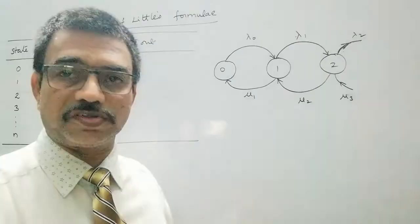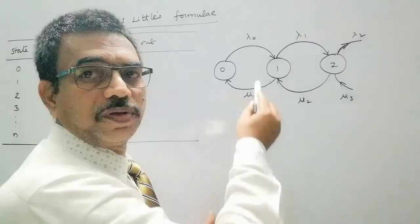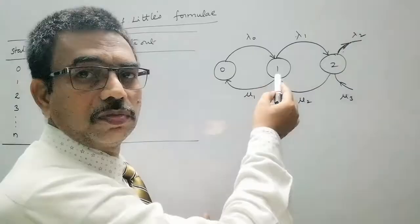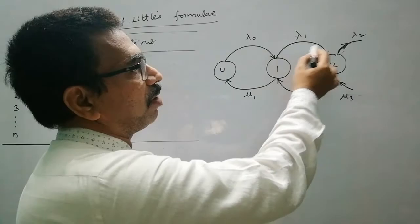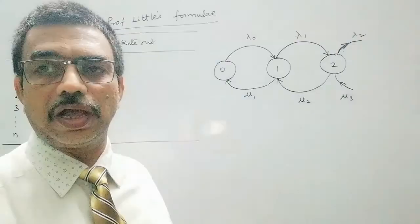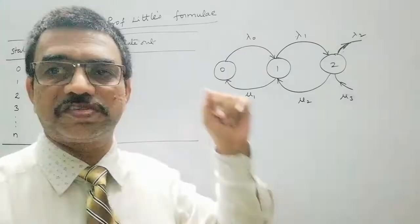Now let us have a quick look at the process. The birth and death process: suppose the current state is 0. Then with a new arrival — that is, with a birth — the state may reach state 1, meaning from 0 to 1, with λ₀ as the mean arrival rate. Here we have λ₀, λ₁, λ₂ as the mean arrival rates of customers, as the arrival rate is dependent on the state of the system.